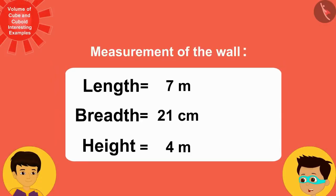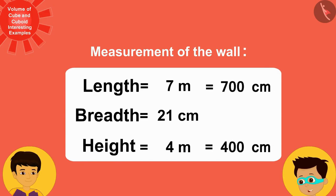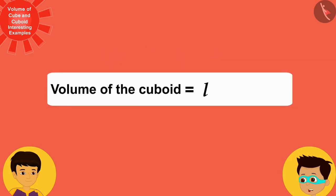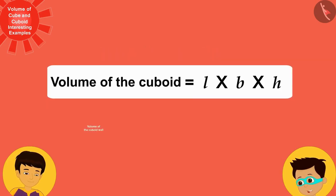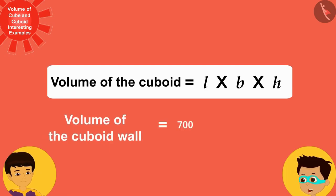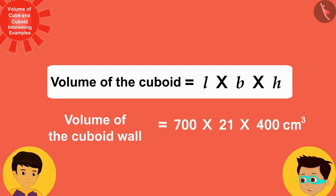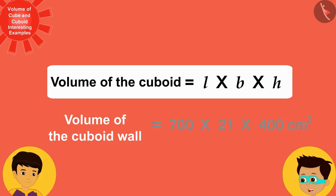First, we will write all these measurements in the same unit — centimeters — in this way. Now, we can write the length, breadth and height of this wall in the formula instead of L, B and H respectively.